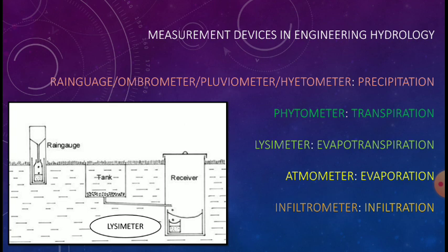Measurement devices in engineering hydrology. First one is rain gauge or ombrometer or pluviometer or hyetometer which is used to measure precipitation. Precipitation may be in the form of rainfall or snowfall. Rain gauges are of two types: non-recording rain gauge and recording rain gauge. Recording rain gauges have four types.